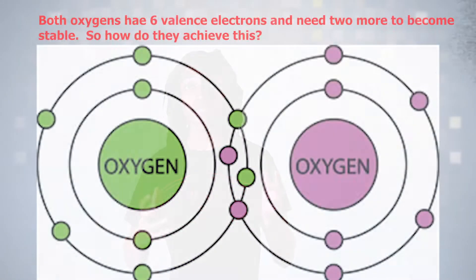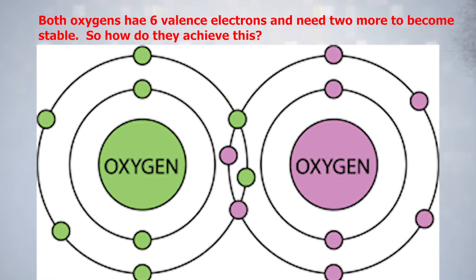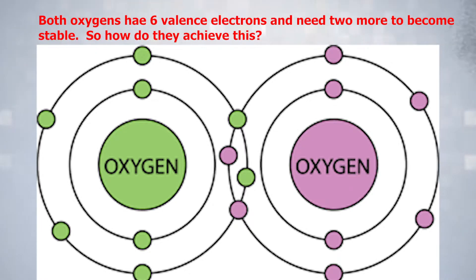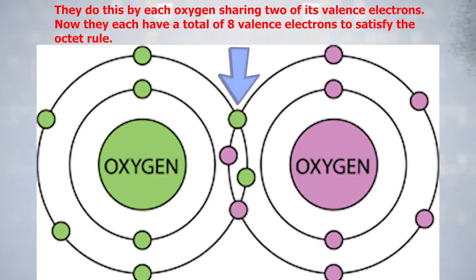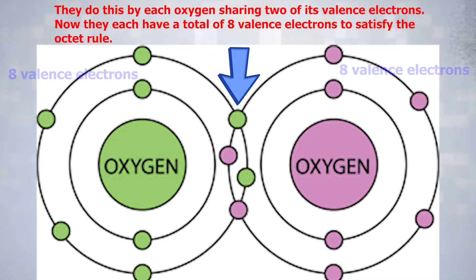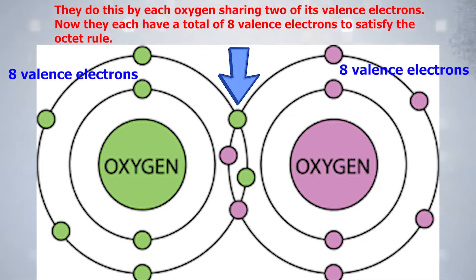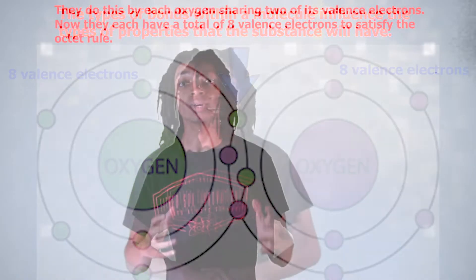Let's use O2 as an example. Both oxygens have 6 valence electrons and need 2 more to become stable. So how do they achieve this? They do this by each oxygen sharing 2 of its valence electrons. Now they each have a total of 8 valence electrons to satisfy the octet rule.